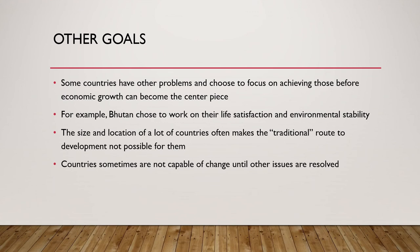A lot of times countries have other goals too. Some countries choose to focus on achieving those before economic growth — like Venezuela needing to sort out its government before growing its economy. One interesting example is the country Bhutan, located near India and Nepal. They chose to work on life satisfaction and environmental stability first, since their life expectancy was one of the lowest. Environmental stability was key — they have mountains, forests, and many species of animals that the people and government cared about, so they chose this over building factories that would tear down rainforests. They chose this over what we coin as developed.